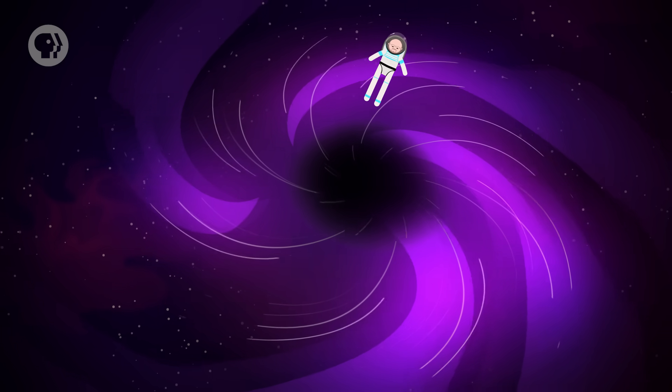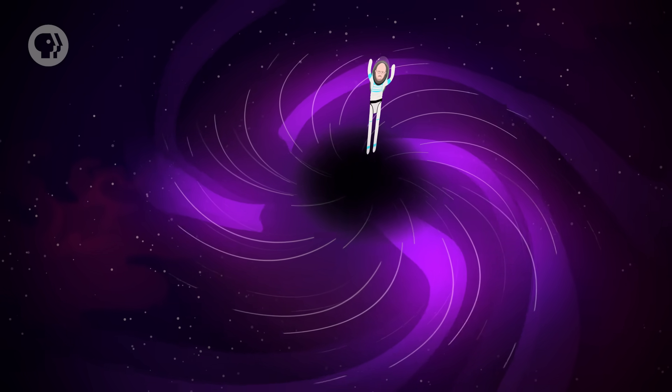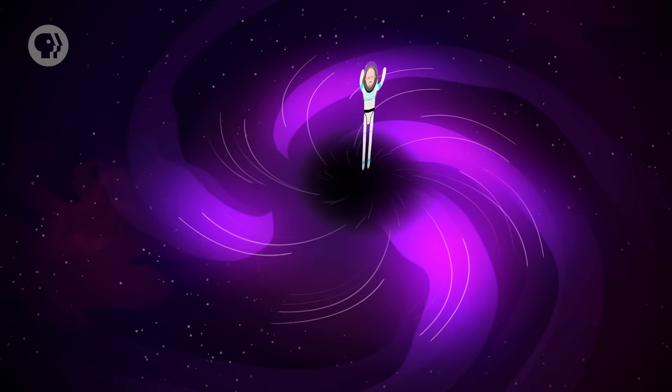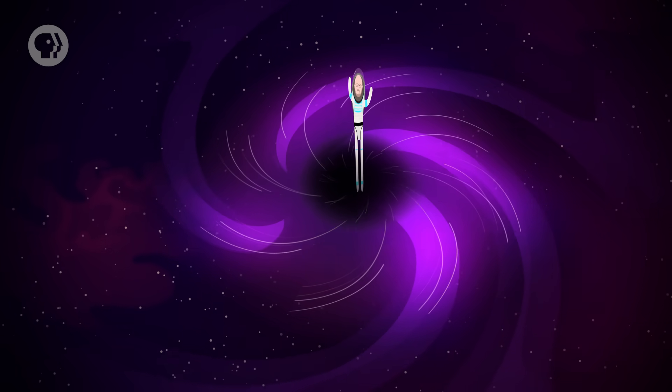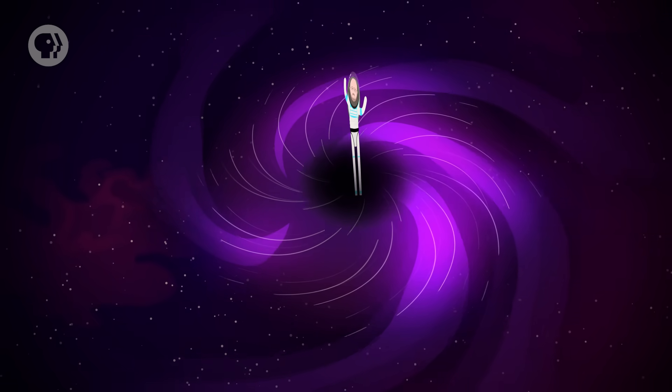Remember, even the meager tides of a planet can rip moons apart. When you multiply that force by a million, you're in trouble. As you fall in, your feet are pulled so much harder than your head that you stretch, pulled like taffy. You'd become a long, thin noodle, kilometers in length, but narrower than a hair wide.